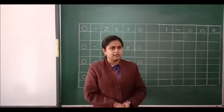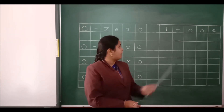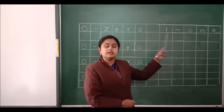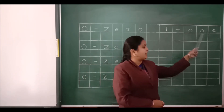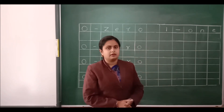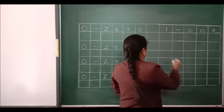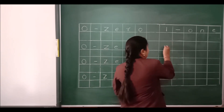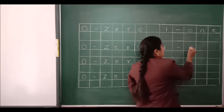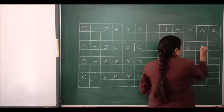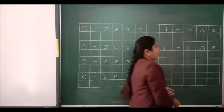After that we will learn the next number. What is our next number? Number 1. And what is the spelling of 1? O, N, E — one. To write number 1, you have to leave one box, then write 1, dash, O, N, E — one.